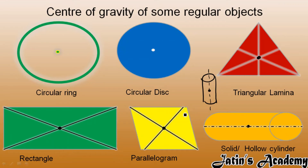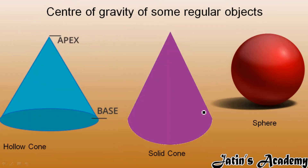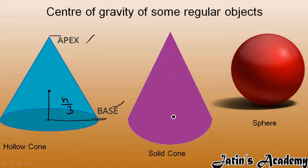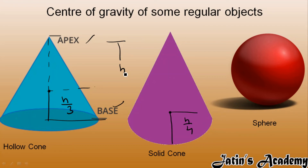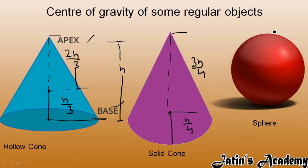For a hollow cone, the center of gravity is measured from the base at h/3. For a solid cone, it is h/4 from the base. From the apex, for the hollow cone the center of gravity is 2h/3, and for the solid cone it is 3h/4 from the apex.